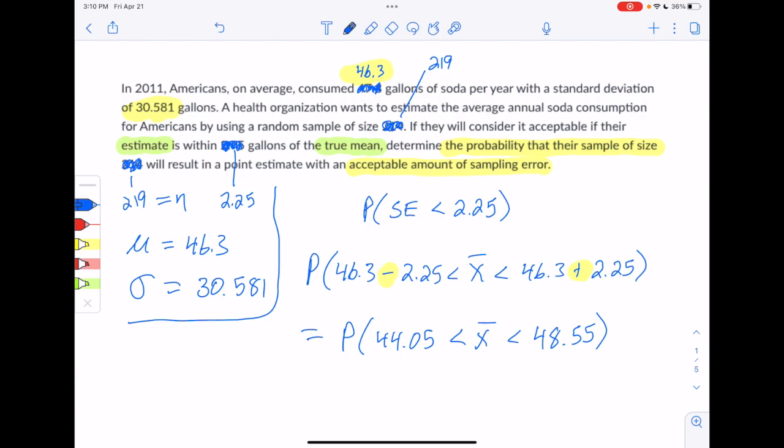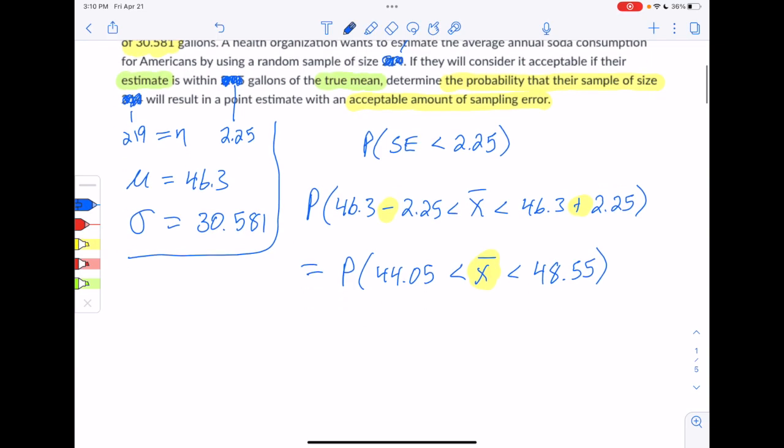And since it's a probability question about x bar, we need to make sure we know the mean of x bar, the standard deviation of x bar, and the distribution of x bar. So let's start off with the mean and standard deviation of x bar. So mu of x bar is always equal to mu. So mu of x bar is equal to mu, which in this case is 46.3.